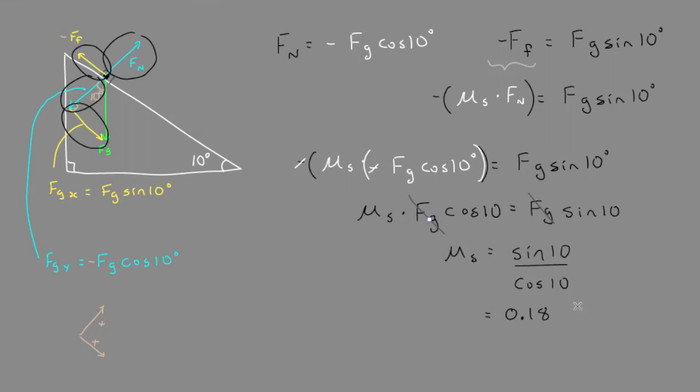It was convenient that fg canceled, because we didn't have the mass and had no way of calculating fg — and we didn't need it. That actually shows that the situation is independent of mass, so it would work the same between an elephant and a mouse. The static friction coefficient has no units — any coefficient of friction is unitless.